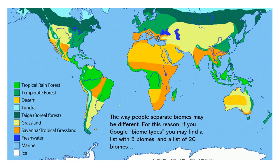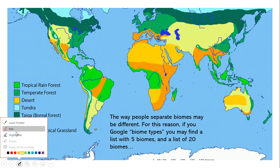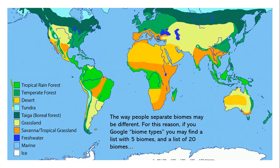We already went over the nine biomes that we are going to talk about. Remember from the reading that the way people separate biomes may be different. So if you Google biome types, you may find a list with just five biomes or a list of 20 biomes — it differs in how specific people want to describe them. Because we're short on time, we'll just be talking about these nine biomes.